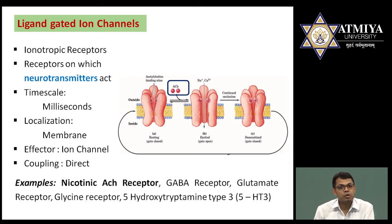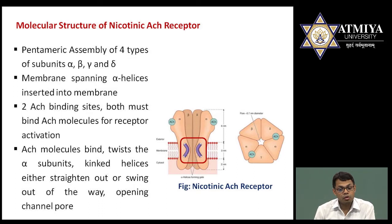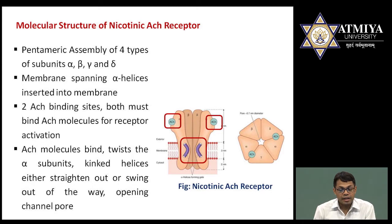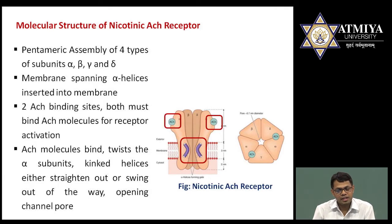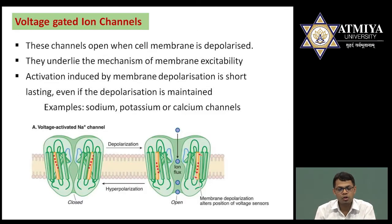Now let us look at the molecular structure of the nicotinic acetylcholine receptor, which is very important and frequently examined. It is a pentameric receptor made up of four subunit types: alpha, beta, gamma, and delta — specifically two alpha, one beta, one gamma, and one delta subunits. There are two acetylcholine binding sites. When two acetylcholine molecules simultaneously bind to the receptor, conformational changes occur, a kink or twist occurs, the ion channel gate opens, and ions are able to cross.